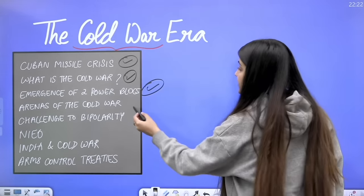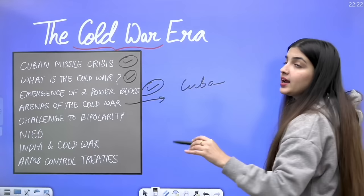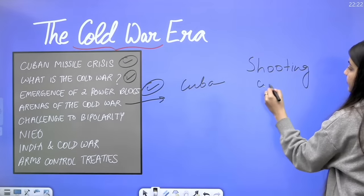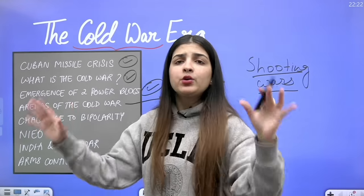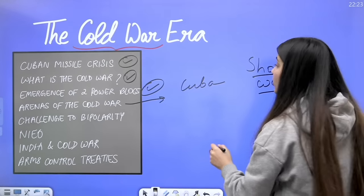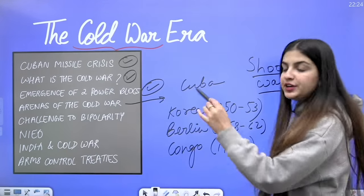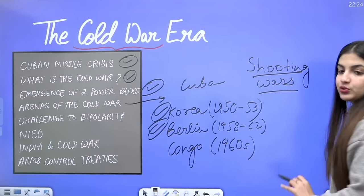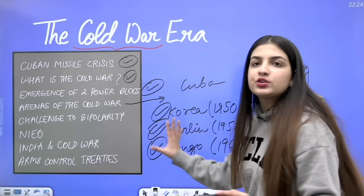In the arenas of the Cold War, it is noted that besides Cuba, confrontations and shooting wars happened in many other places — limited hot wars where bombs were used, but at a limited level in limited areas that did not impact the whole world. One such arena was Korea, from 1952 to 1953, and others during the 1960s.